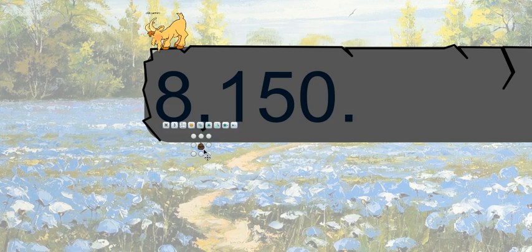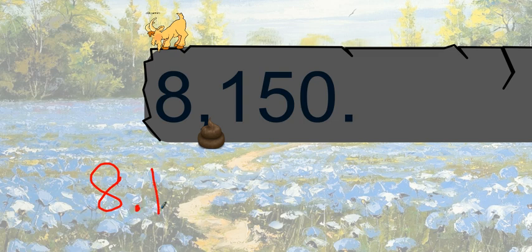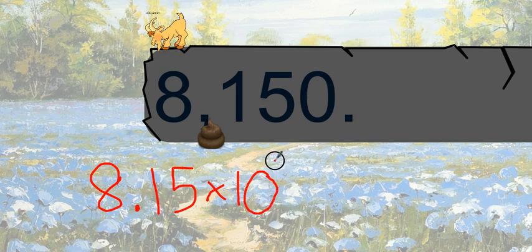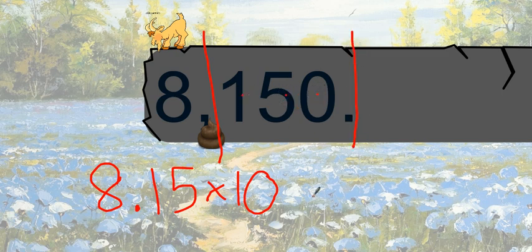Everything was hunky-dory, but then the very next week there he was looking over the edge, and again he pooped — that's gross. Well, what do you do? Eight point one five times ten to the... let's see. There's the decimal, there it is — one, two, three. Bam, you did it! That's a big number, it's bigger than eight.